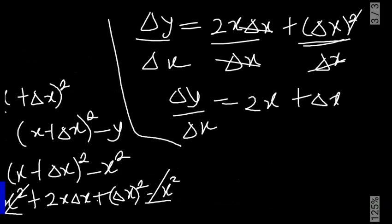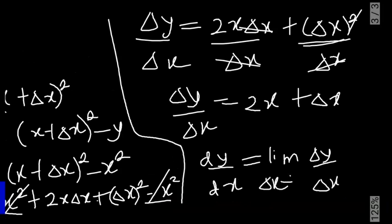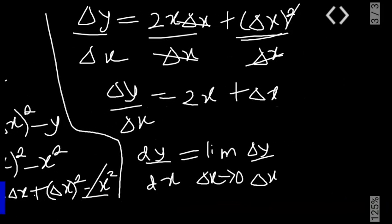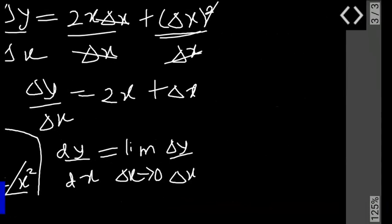Now to get our dy over dx. You should know that dy/dx is equal to the limit of Δy over Δx. As Δx turns to zero, as Δx approaches zero, the limit of Δy over Δx becomes dy/dx.